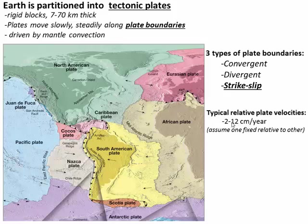Another overview piece: how fast is this happening? Plates are typically moving relative to each other roughly 2 to 12 centimeters per year. That doesn't seem very fast, but if you're up around 12 centimeters per year, that plate is moving a meter every 10 years — so that's a noticeable difference on a human timescale.